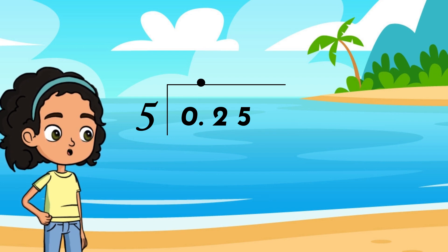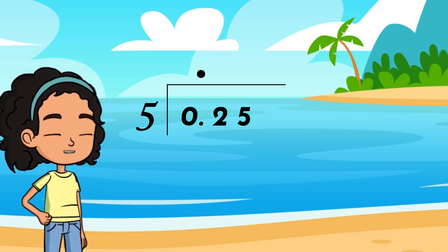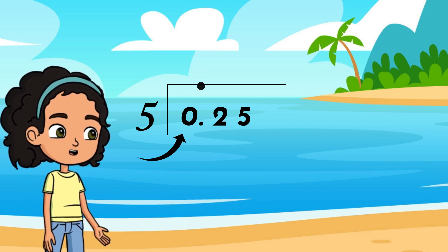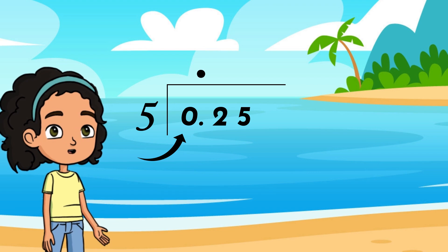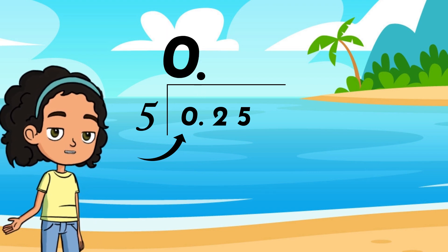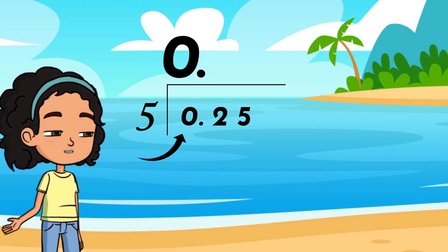Step one, go ahead and bring your decimal up. How many groups of five can you get from zero? Zero groups. That is your first digit in your quotient.